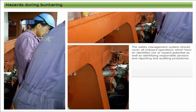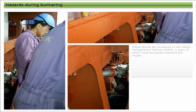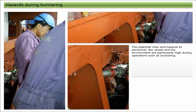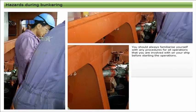The safety management system should cover all onboard operations which have an identified risk or hazard potential, as well as identifying responsible persons and reporting and auditing procedures. These should be contained in the safety management manual, a copy of which must be placed on board the vessel. The potential risks and hazards to personnel, the vessel, and the environment are particularly high during operations such as bunkering, and these operations will be covered by the procedures within the safety management manual.